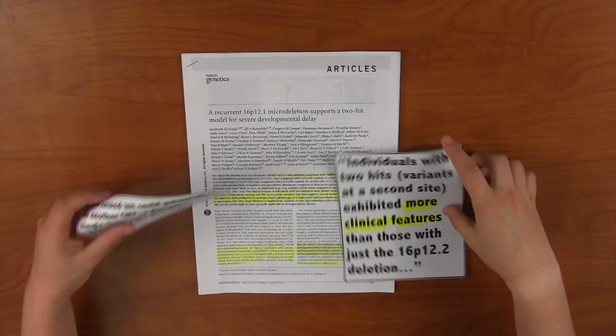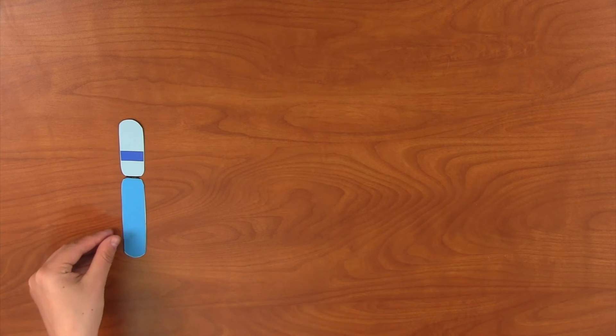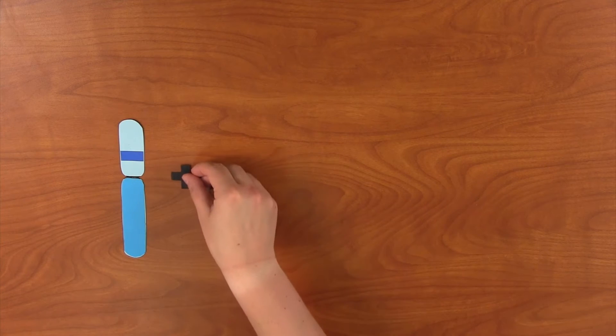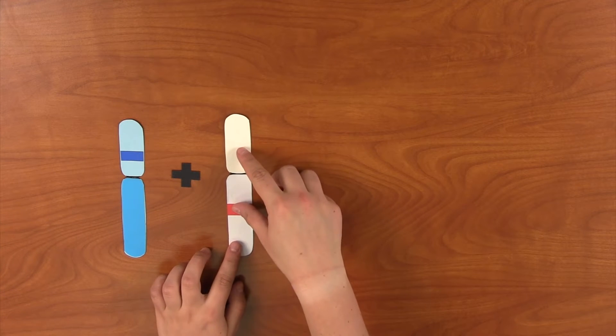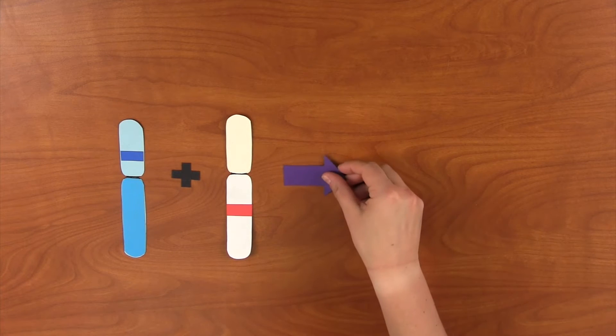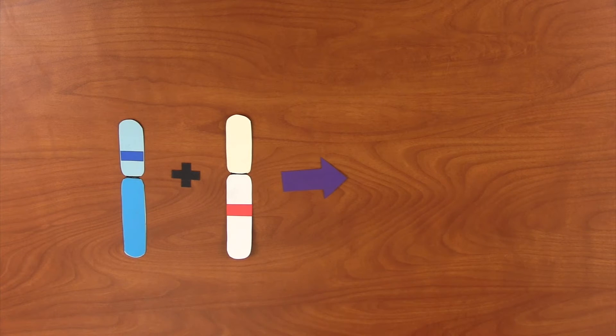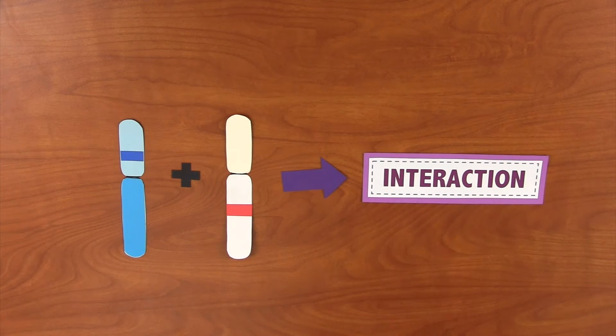The outcome of the 16P12.2 deletion in a second hit variant causes an interaction between the two erroneous genes, which is worse than just an additive outcome. The affected genes are somehow interacting and causing the symptoms of the deletion to manifest or present itself very differently among people that are affected.